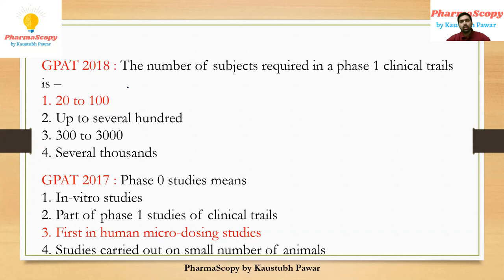In GPAT 2018, there was also a question on clinical trials. The question was: the number of subjects required in phase one clinical trials. This is a straightforward question — as we saw in the table, the correct answer is 20 to 100. And as the phase increases, the number of patients increases.